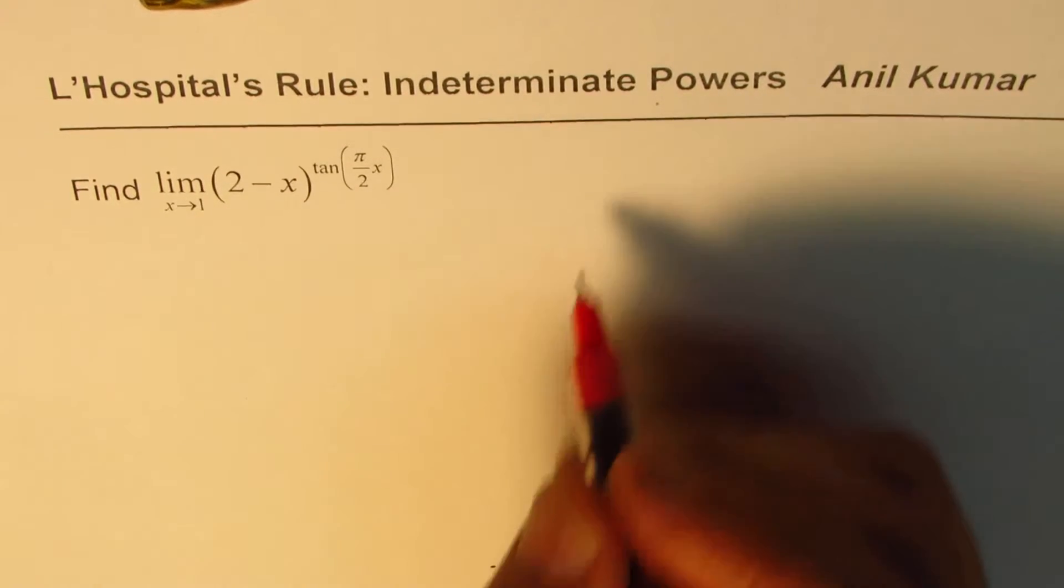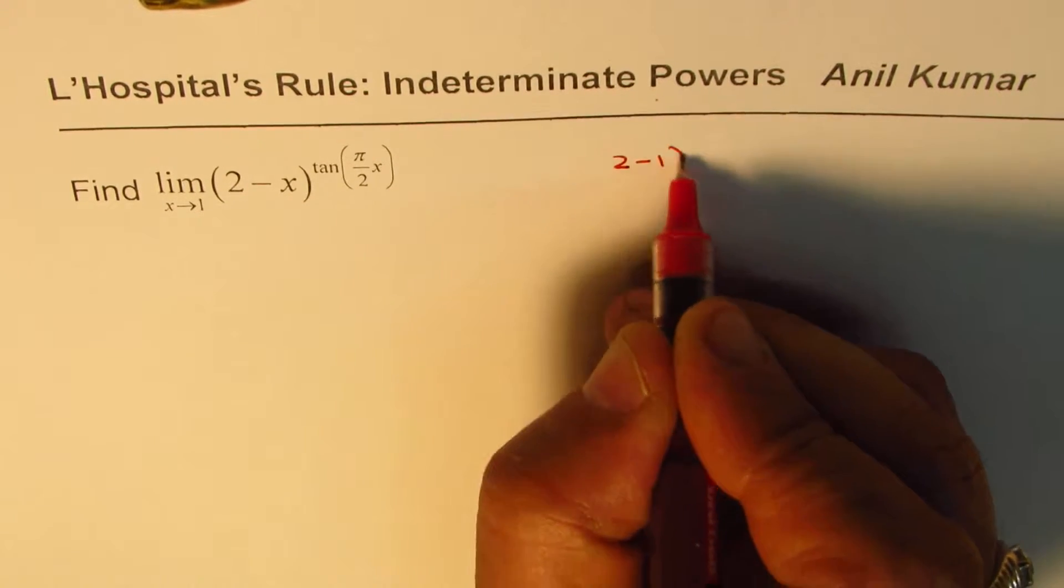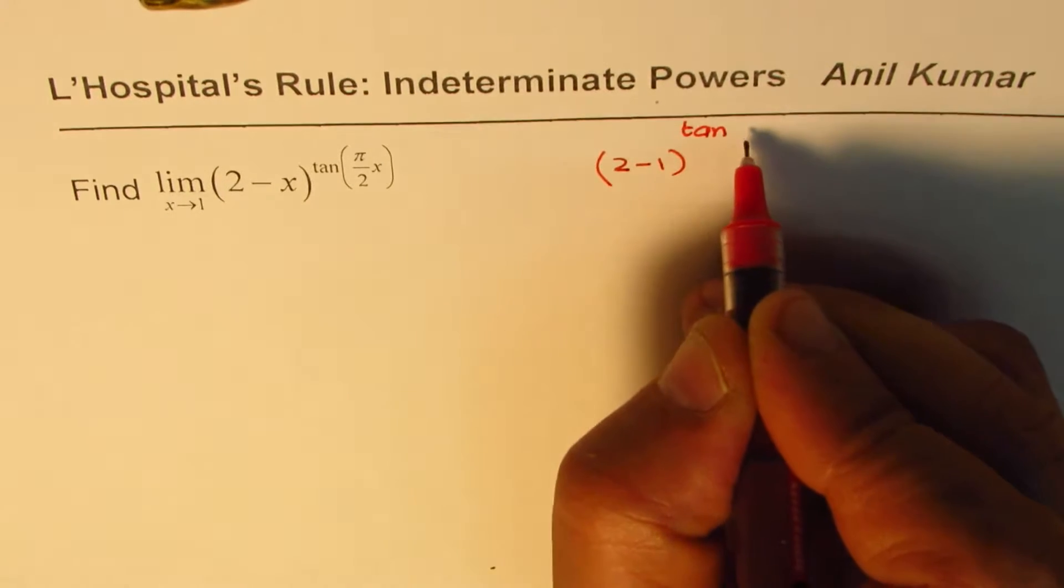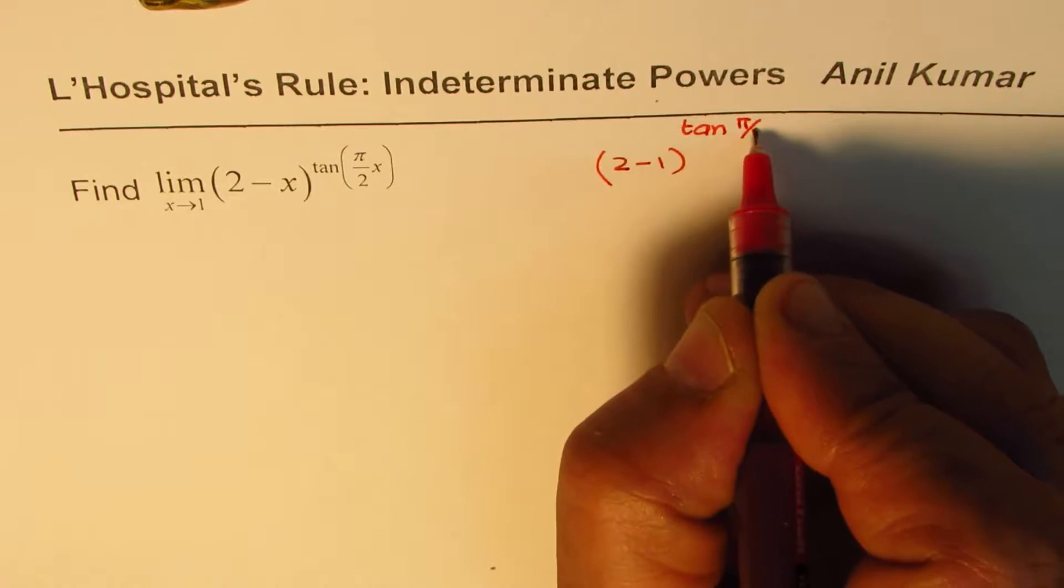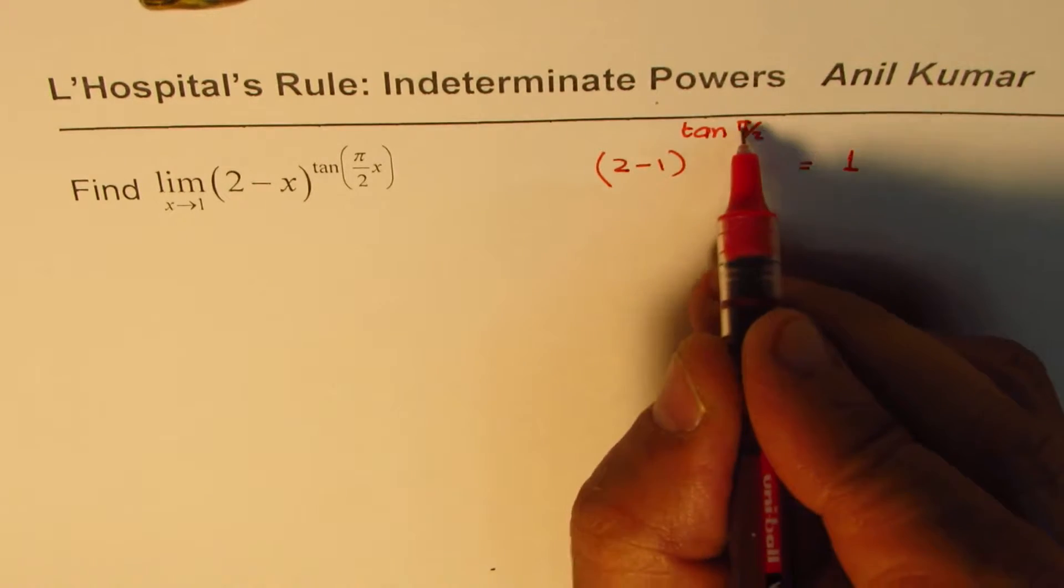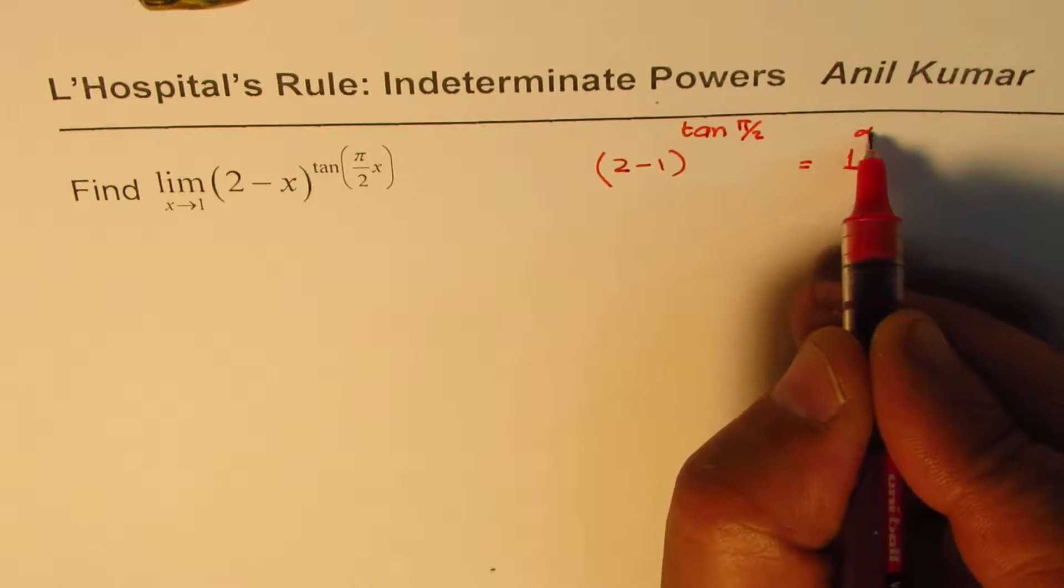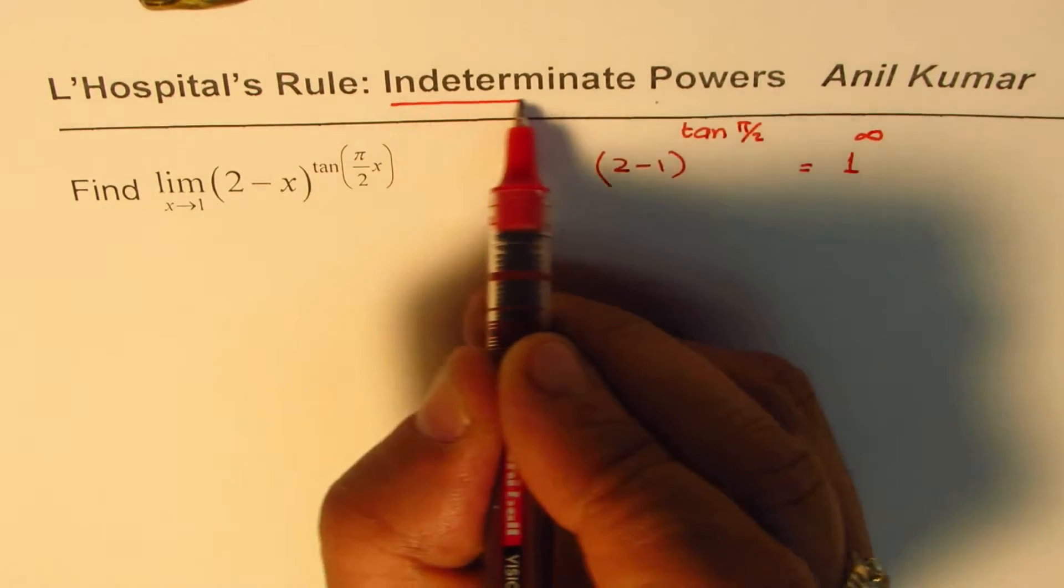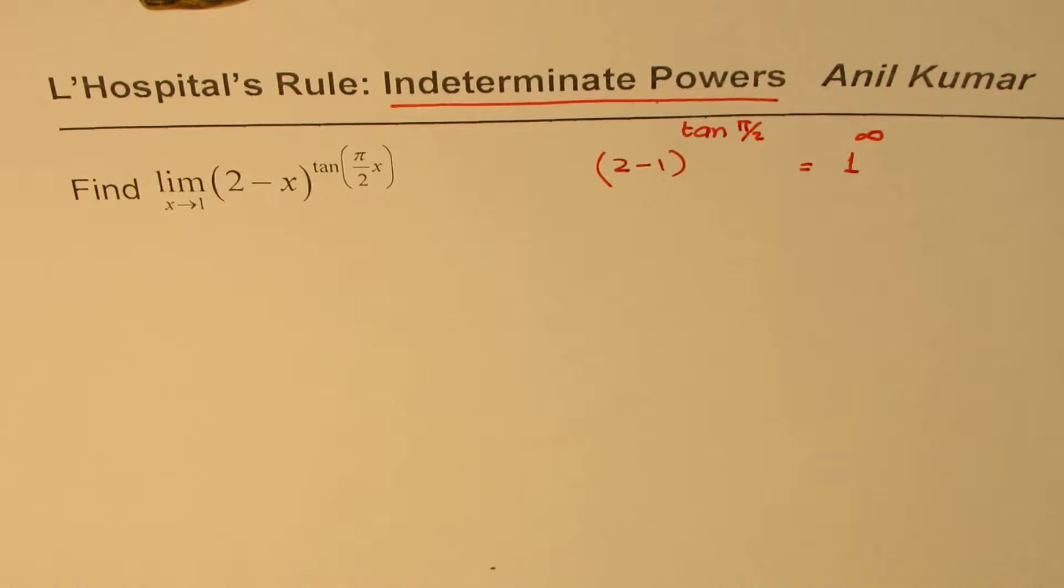If I substitute 1 here, I get 2 minus 1, and on the top as an exponent we get tan(π/2). Now as you know, 2 minus 1 is 1, and tan(π/2) is infinity. So we have 1 to the infinity, which is the indeterminate power.